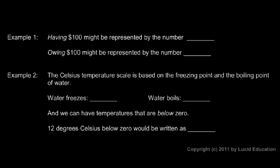Okay, example number one. Having $100 might be represented by the number 100. And then owing $100. Owing is the opposite of having. So, owing $100 might be represented by the number negative 100. If you have $100, that number 100 represents how wealthy you are. And if you owe someone $100, that number negative 100 represents how wealthy you are.